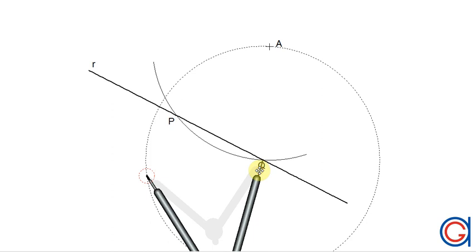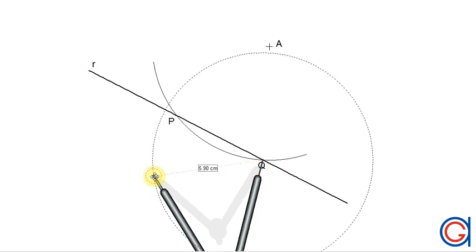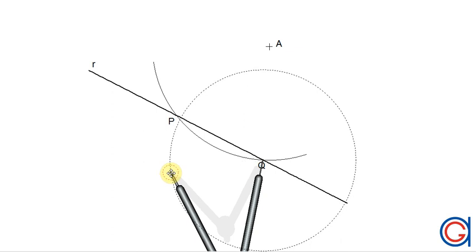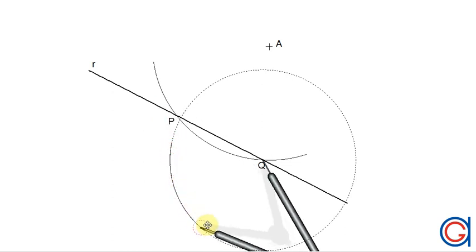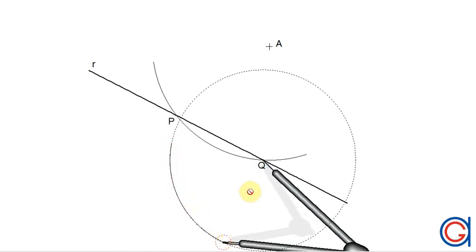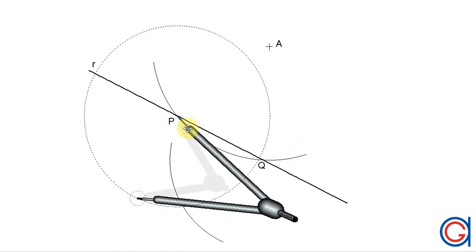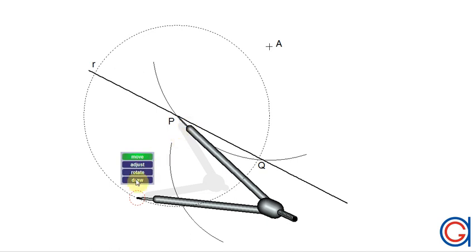The next step is setting our compass to a given radius—it doesn't really matter what length. Setting our compass on the new point Q, we scribe an arc below the line. Now, with the same radius, setting the compass on point P, we scribe another arc until it cuts our previously drawn arc.